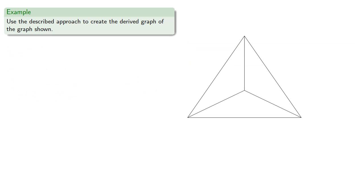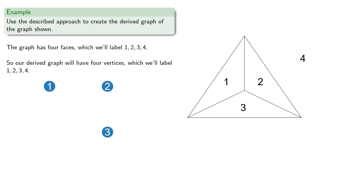So let's use the described approach to create the derived graph of the graph shown. The graph has four faces, which in a fit of originality we'll label 1, 2, 3, and don't forget the outside face, 4. So our derived graph will have four vertices, which we'll label 1, 2, 3, and 4.